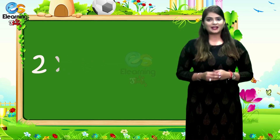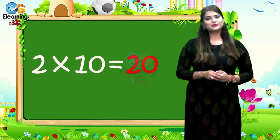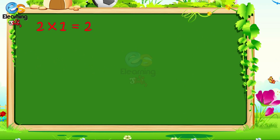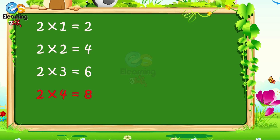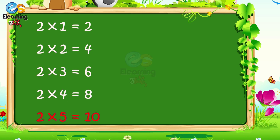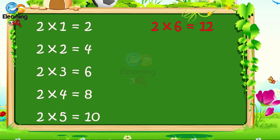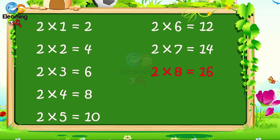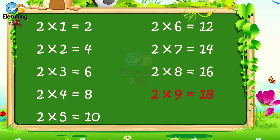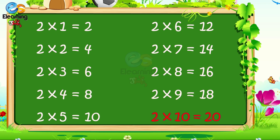2 9s are 18. 2 10s are 20. 2 1s are 2. 2 2s are 4. 2 3s are 6. 2 4s are 8. 2 5s are 10. 2 6s are 12. 2 7s are 14. 2 8s are 16. 2 9s are 18. 2 10s are 20.